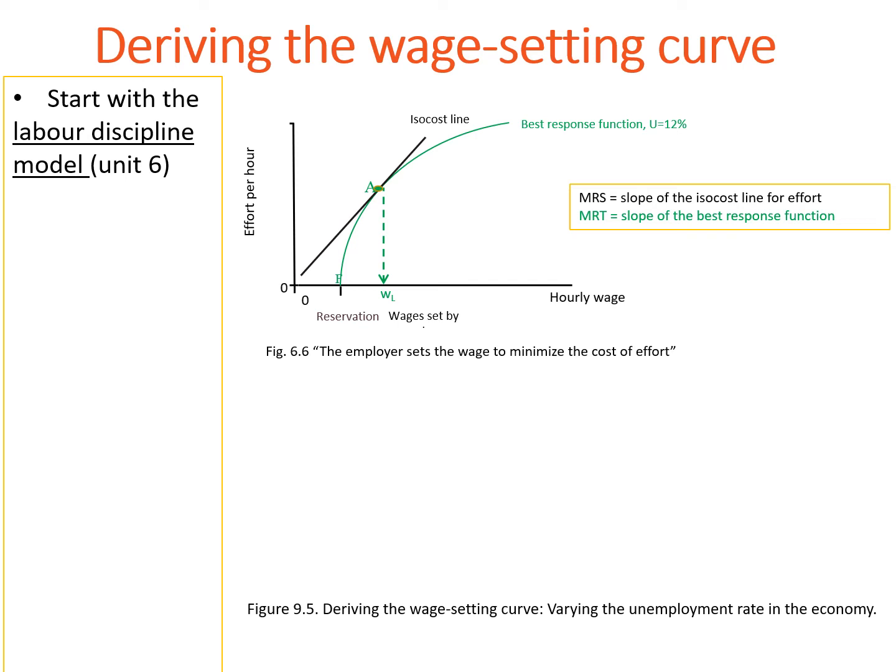In this figure, with an unemployment rate of 12%, the reservation wage is shown by point F. The employer's profit-maximizing choice is point A, with the low wage.